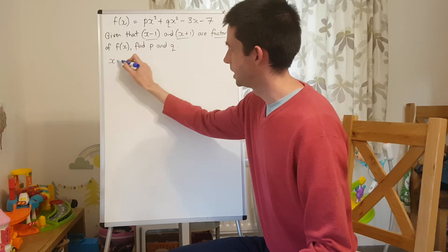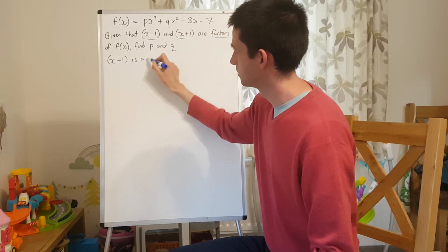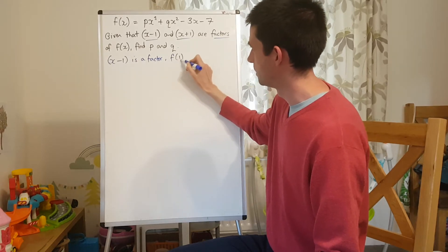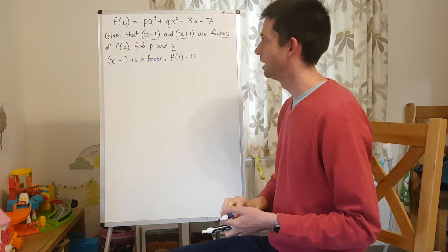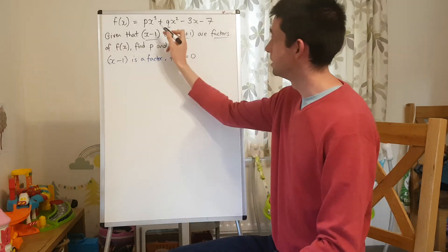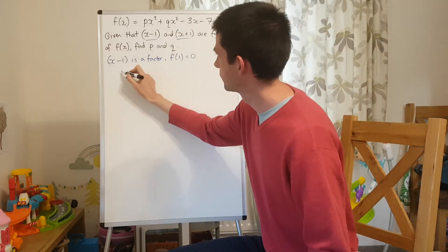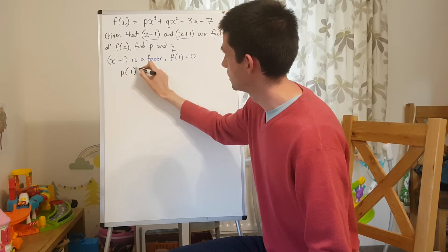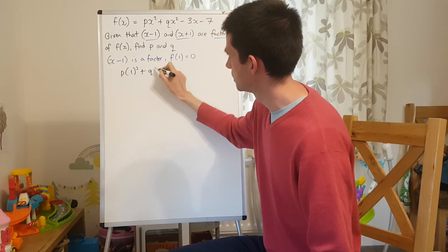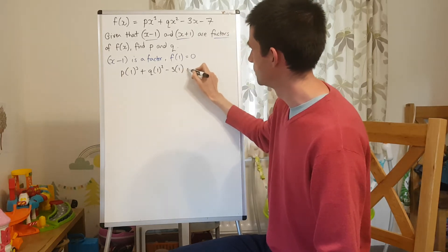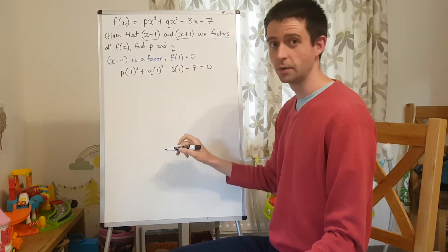The first thing I'm going to use is if (x - 1) is a factor, then that means that f(1) must equal 0. And I'm going to substitute 1 into this function here and equate it to 0. So, p(1)³ + q(1)² - 3(1) - 7 = 0.